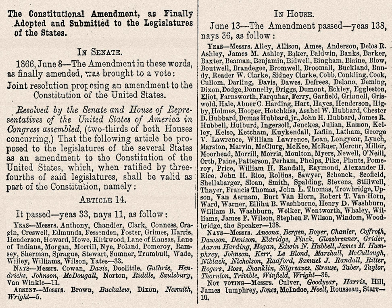Section 3 prohibits the election or appointment to any federal or state office of any person who had held any of certain offices and then engaged in insurrection, rebellion, or treason. However, a two-thirds vote by each House of the Congress can override this limitation. In 1898, the Congress enacted a general removal of Section 3's limitation. In 1975, the citizenship of Confederate General Robert E. Lee was restored by a joint congressional resolution, retroactive to June 13, 1865. In 1978, pursuant to Section 3, the Congress posthumously removed the service ban from Confederate President Jefferson Davis. Section 3 was used to prevent Socialist Party of America member Victor L. Berger, convicted of violating the Espionage Act for his anti-militarist views, from taking his seat in the House of Representatives in 1919 and 1920.